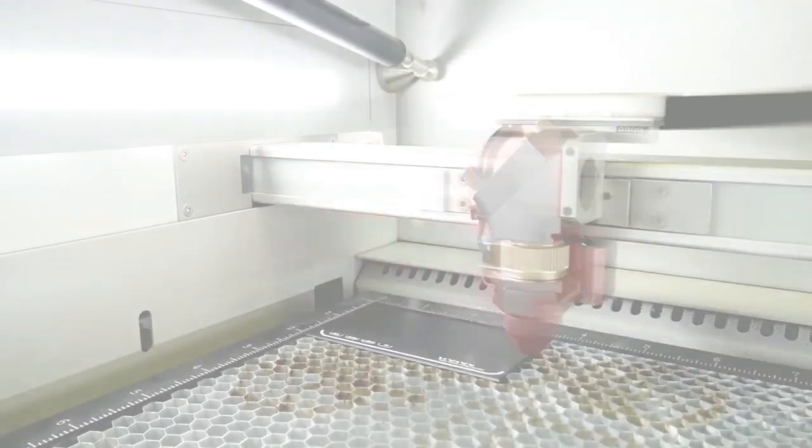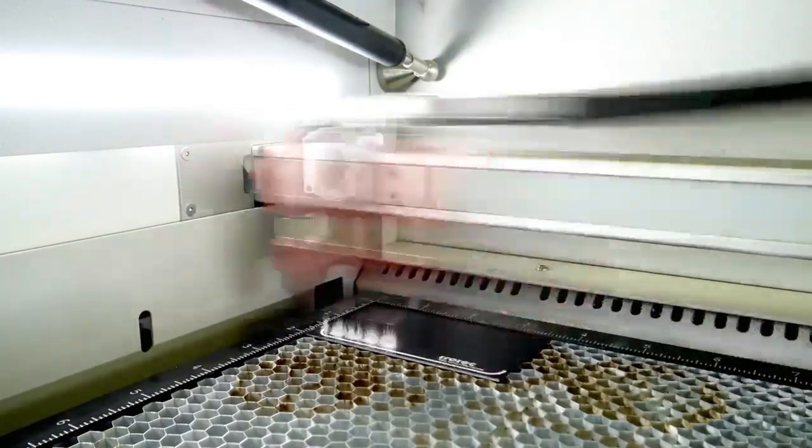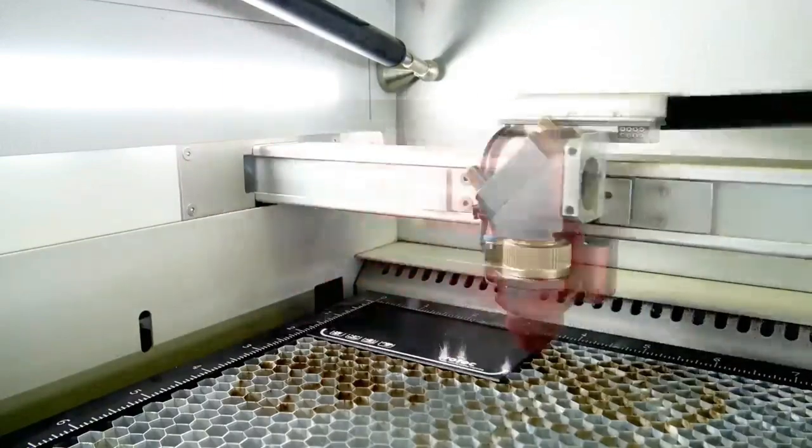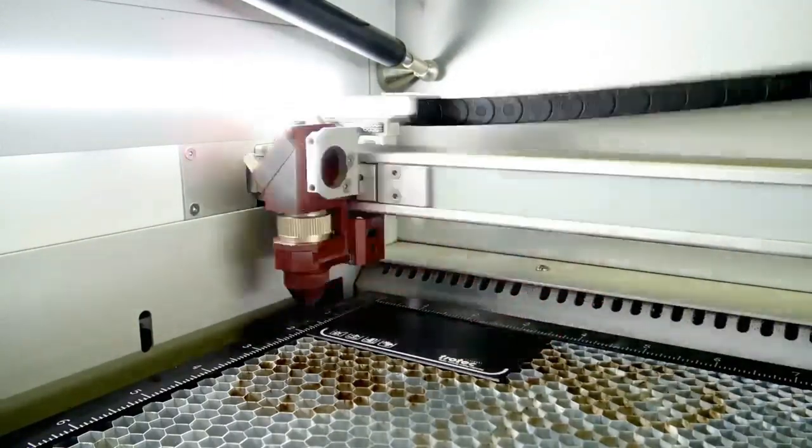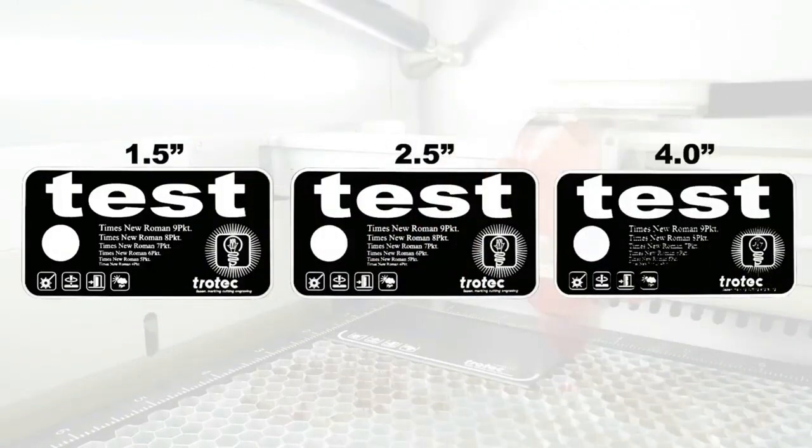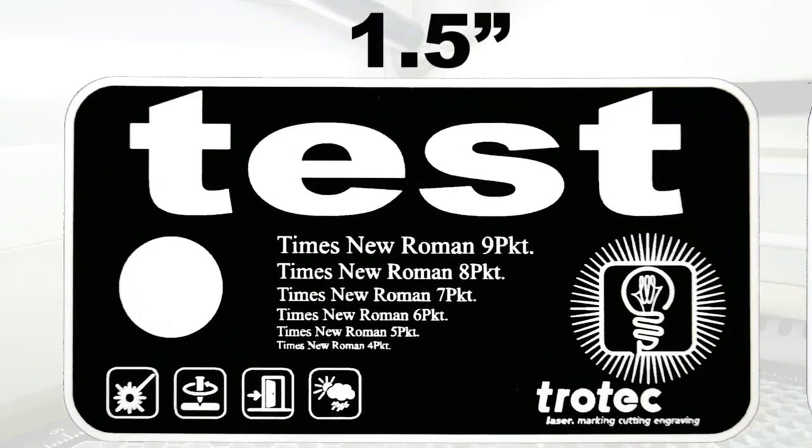For this first example we will engrave a Trotec test graphic using the 1.5, 2.5, and 4 inch lens on anodized aluminium. Here we can observe the results on three pieces and we can see that the 1.5 inch lens is able to produce the clearest engraving in the areas where we have the smallest details.